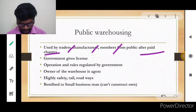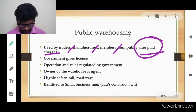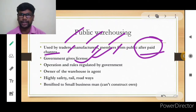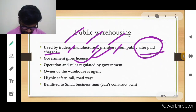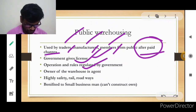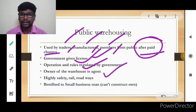Unlike private warehouses which are owned by the private sector, public warehouses require users to pay charges. The operator must first obtain a government license to run this godown. The government provides rules and regulations about the operation of the godown — the government is regulating it.